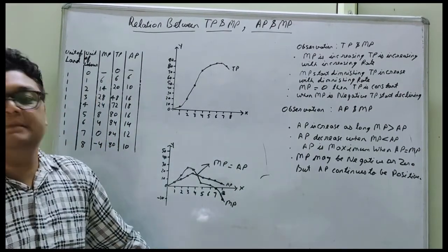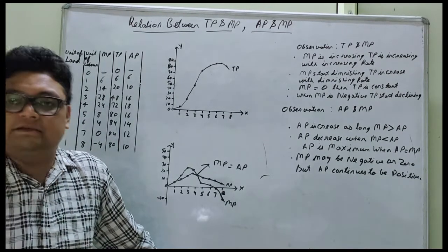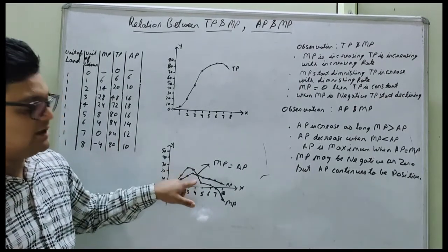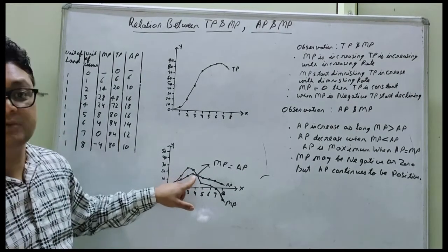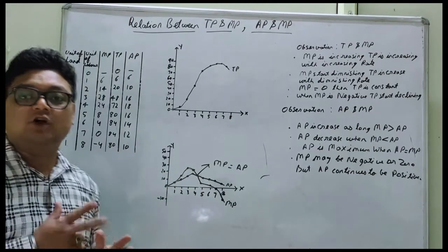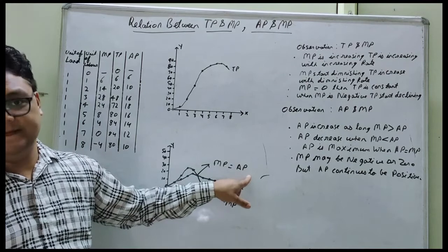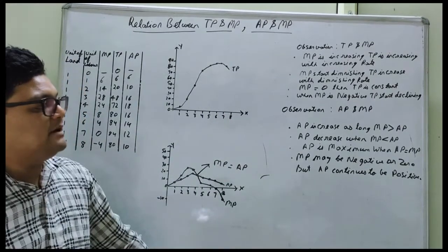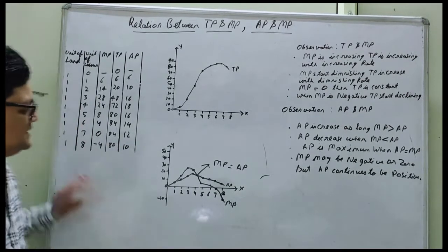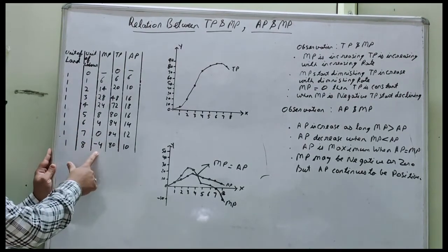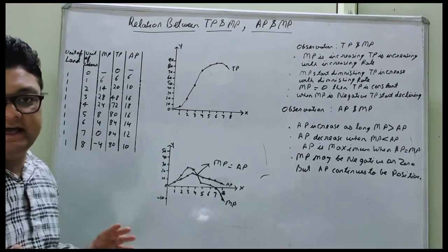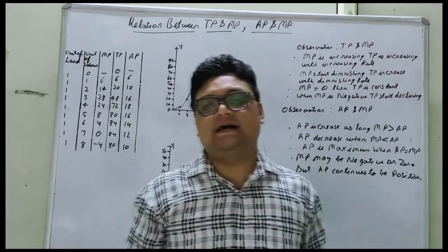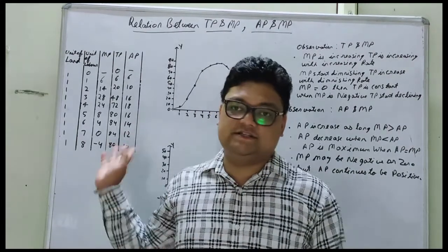Third: AP is at its maximum when MP equals AP. When you plot the graph, at some point the two curves will intersect each other — that point is where MP equals AP, and that is the point where AP will be at its maximum. Also note: MP may be negative or zero, but AP will always continue to be positive — AP will never become zero or negative. If there is any query related to this topic, please ask. After this video, please do the practice questions given for this chapter. Thank you very much.